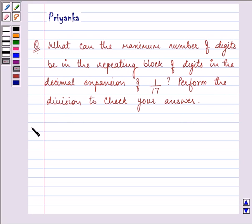Now let us start with our solution. We need to convert 1 by 17 into decimal form by actual division. So let us start with our division process.